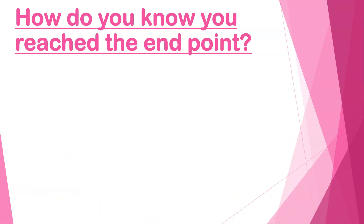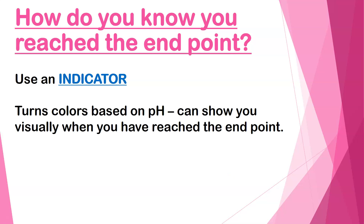So how are we going to know we've reached the end point? What we will use in our class is what we call an indicator. An indicator is a chemical that you add that's not part of the actual neutralization reaction, but it will turn colors based on the pH of the resulting solution. When you see the color change, you know that you have reached the end point. You have to be careful and pick the right indicator for the right pH range.